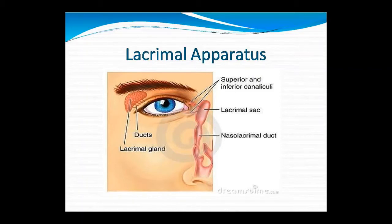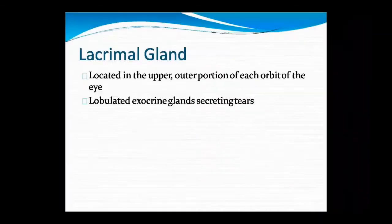You have seen that sometimes when we eat spicy food, tears start from our eyes — this is not a separate structure. It is a secretion of the lacrimal gland. You can understand through the diagram. The lacrimal gland is found in the outer and upper portion of each eye.